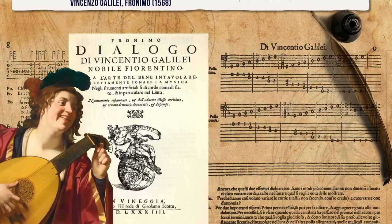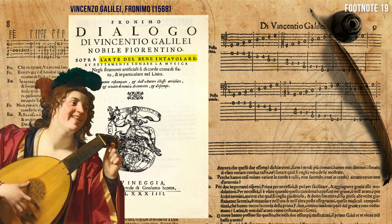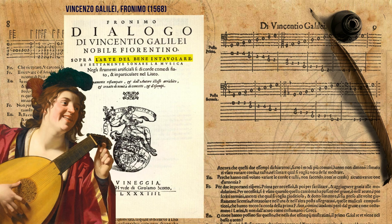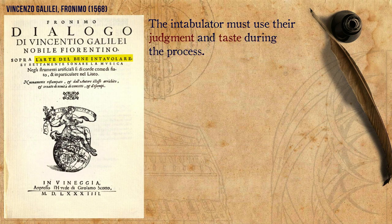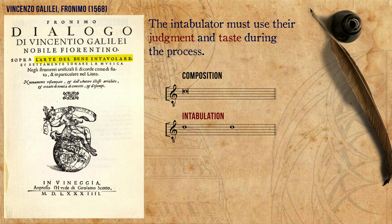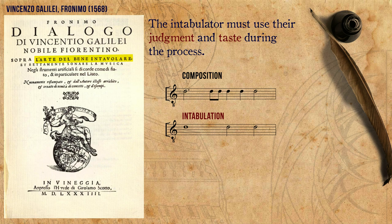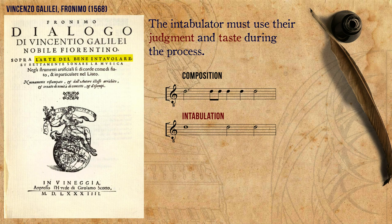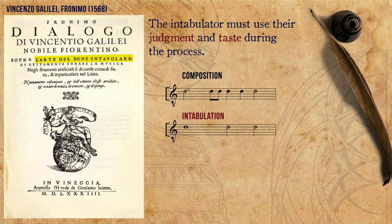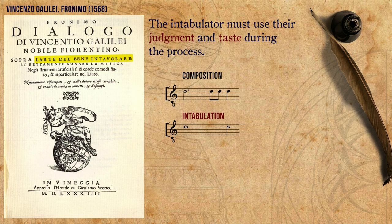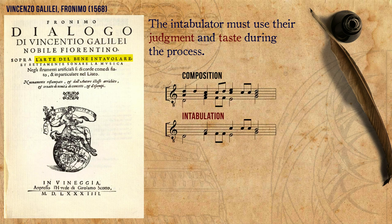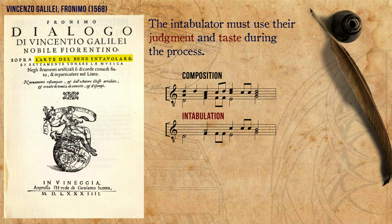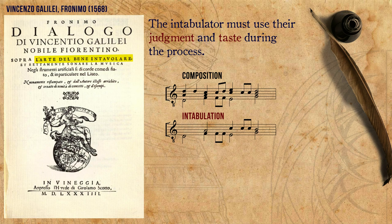Vincenzo Galilei, who might be the writer who wrote the most about intabulating — in his case for the lute — explained that the intabulator must use their judgment and taste during the process: to decide whether some long notes might be divided and restruck, whether some composed note repetitions were actually needed or only added because of some compositional necessity and may be omitted, which notes should be played when there are just too many voices, and lastly, which notes to keep and which to omit in order to make the imitations inside a piece most audible and clear.